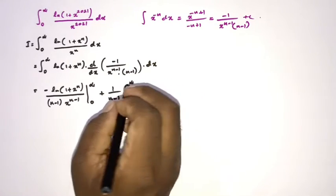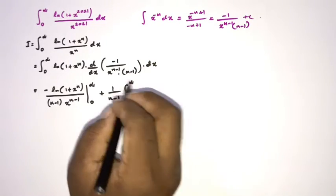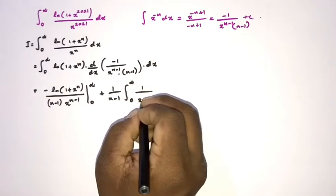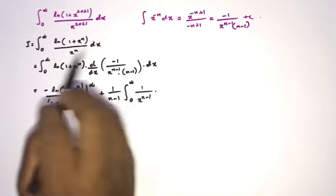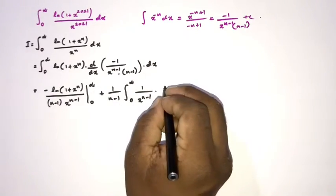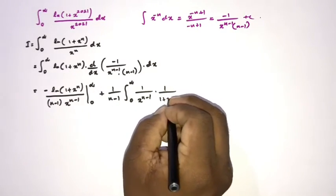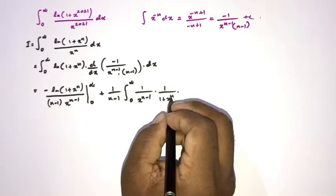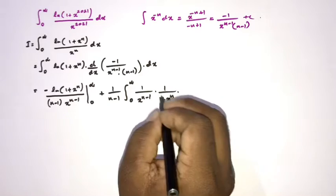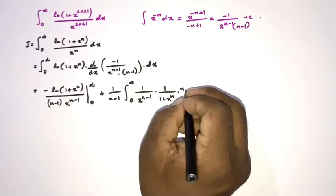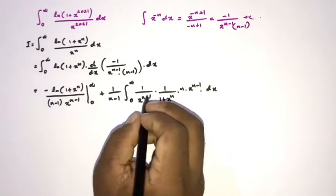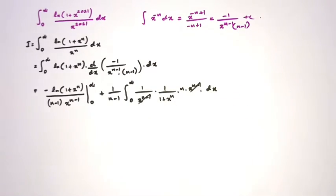The constant 1/(n-1) comes outside the integral. Inside we have 1/x^(n-1) multiplied by the derivative of ln(1 + x^n). By the chain rule, that derivative is n·x^(n-1) / (1 + x^n). The factors of x^(n-1) cancel.